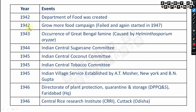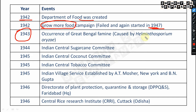In 1942, the Department of Food was created. Also in 1942, the 'Grow More Food' campaign was started, but it failed and was restarted in 1947. The Bengal Famine — caused by Helminthosporium oryzae (rice blast) — is very very important to remember.